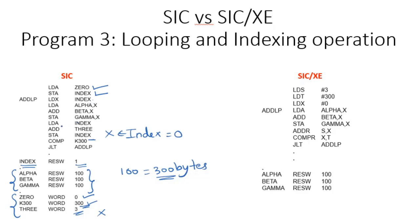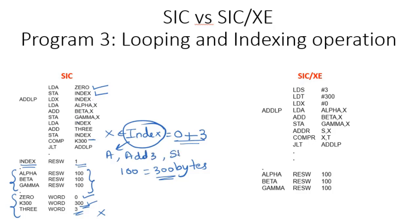We store the sum alpha plus beta in gamma at the position pointed to by X, which is 0. Now one iteration is over. After one iteration, we must increment the index register to point to the next element, which means incrementing by 3. To do this, we load the value of index into the accumulator, add 3 to it, and store the incremented value back in the memory location 'index'. Then we compare the accumulator content — COMP compares the accumulator against the constant 300. The accumulator will be 3 now, which is less than 300, so we go back and repeat the loop.